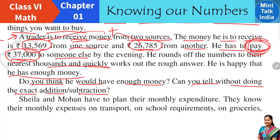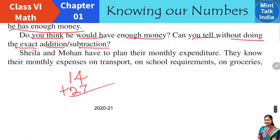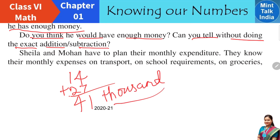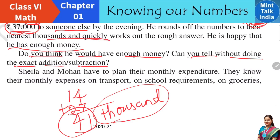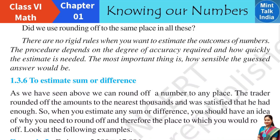We can mentally estimate this. The number 13,569 — we can round off to more than 14,000. Now 26,785: since 785 is more than 500, rounding to the nearest thousand gives 27,000. Mentally adding 14,000 and 27,000 gives 41,000. Since this trader has approximately 41,000 and has to give 37,000 to someone else, he will easily be able to give it.